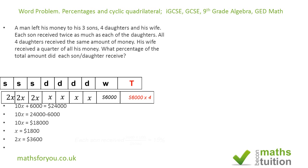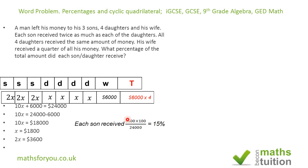If we double that for each of the sons, we have 2X equals three thousand six hundred dollars. For the percentage, we do three thousand six hundred divided by twenty-four thousand, times one hundred to express the proportion as a percentage. That gives us 15%. The daughter's percentage should be seven point five percent.